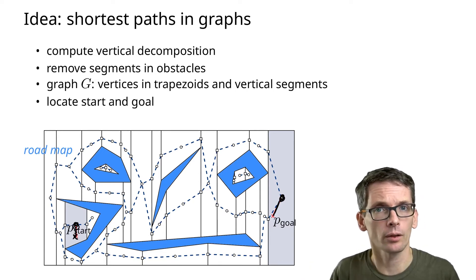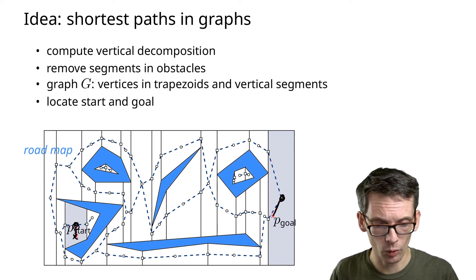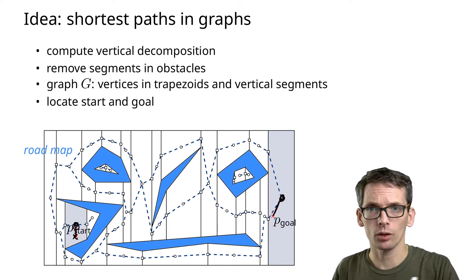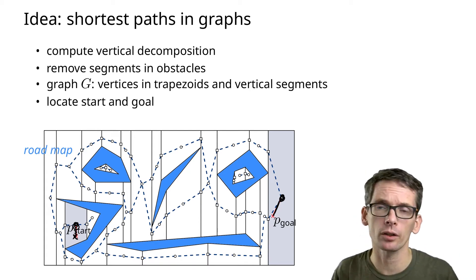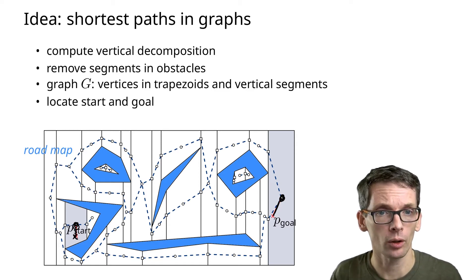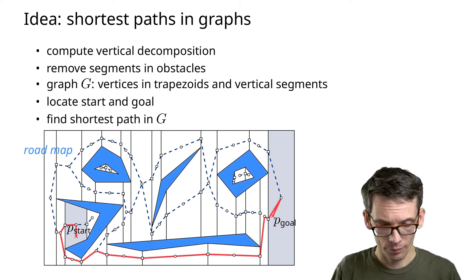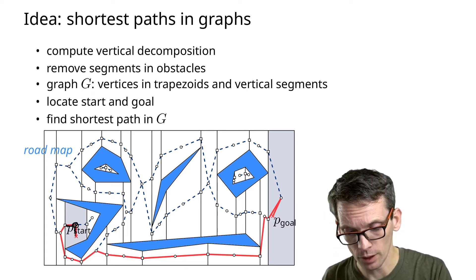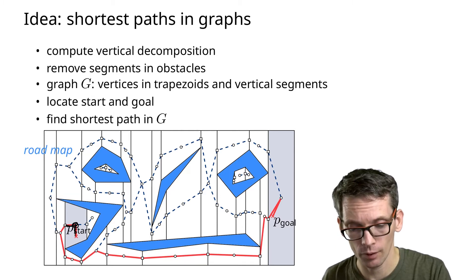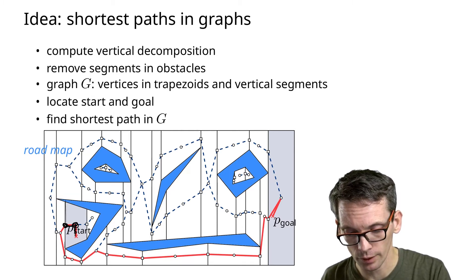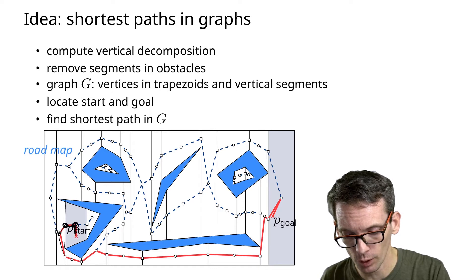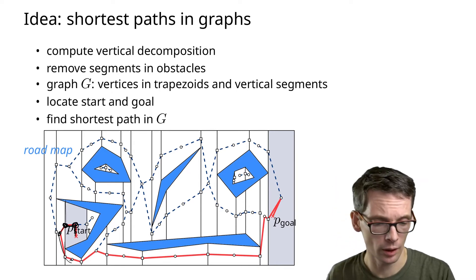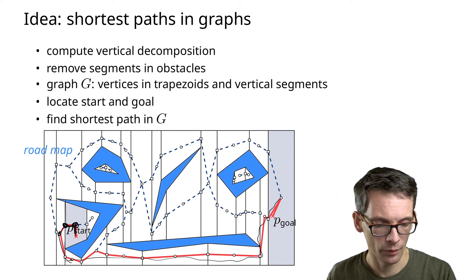For that you can use whatever algorithm you want — for instance, shortest path here is just minimum in terms of number of edges traversed, so that could be a breadth-first search. As an example, the shortest path might go to the vertex of the face, then via the vertex of a vertical extension, then to the next face, vertical extension, next face, and so on — and eventually this path reaches the goal.